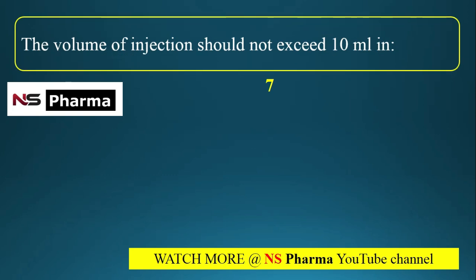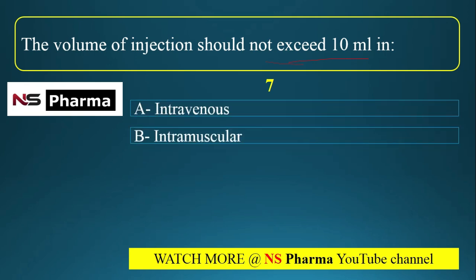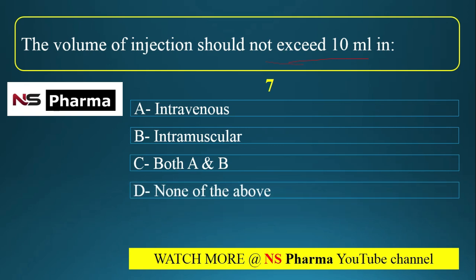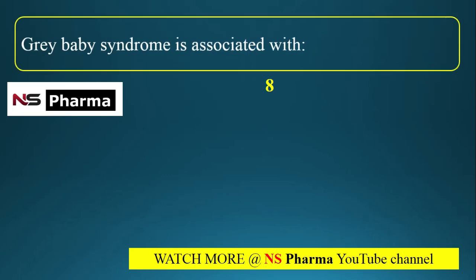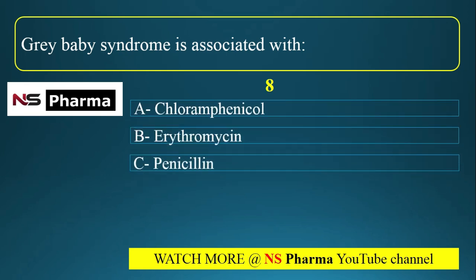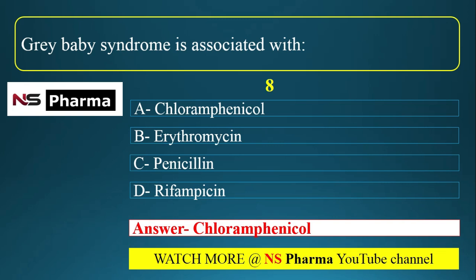The volume should not exceed 10 ml in case of intramuscular injection. Options were: option A, intravenous; option B, intramuscular; option C, both A and B; option D, none of the above. In case of intravenous we can administer large volume; in case of intramuscular the maximum volume is 10 ml, normally giving 3 ml. The correct answer is option B. Now question number nine: gray baby syndrome is associated with. Options are: option A, chloramphenicol; option B, erythromycin; option C, penicillin; option D, rifampicin. Gray baby syndrome is the side effect of chloramphenicol — chloramphenicol is the correct answer.